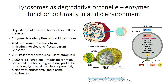Lysosomes are the primary degradative organelle in the cell. They are characterized by their low acidic pH and the presence of multiple degradative enzymes. These proteases, lipases, and others are pH sensitive and work optimally in acid conditions. It's thought that this requirement helps protect cellular constituents in the event of lysosomal rupture, because the enzymes will be unable to break down cellular material because of the higher pH.